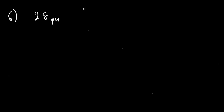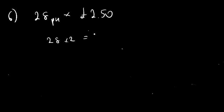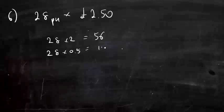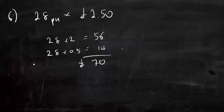Question 6. A school sold copies of the class photograph to 28 pupils in the class for £2.50 each. What was the total amount raised from the sales of the photograph? This is a partitioning question: 28 times £2.50, split into 28 times 2 which is 56, and 28 times half a pound which is 14. Add them together to get £70.